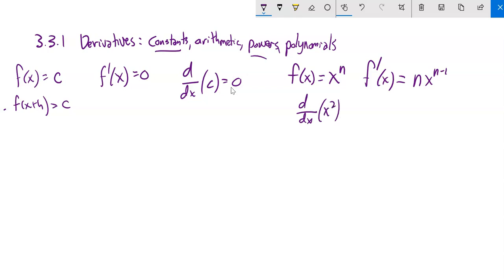The derivative is what the power was times the variable, and then that power is reduced by 1. So f prime of x equals n times x to the n minus 1. The derivative of x squared is 2x to the first power. Or if f of x is x cubed, f prime is 3x squared.